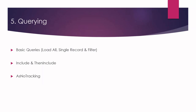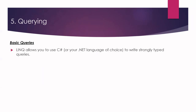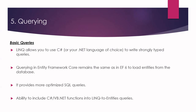Entity Framework Core uses Language Integrated Query — LINQ — to query data from the database. LINQ allows us to use C# or .NET languages to write strongly-typed queries based on your context and entity classes. Querying in EF Core remains similar to EF6, providing more optimized SQL queries, and you can include C# or VB.NET functions in your LINQ to Entities queries.